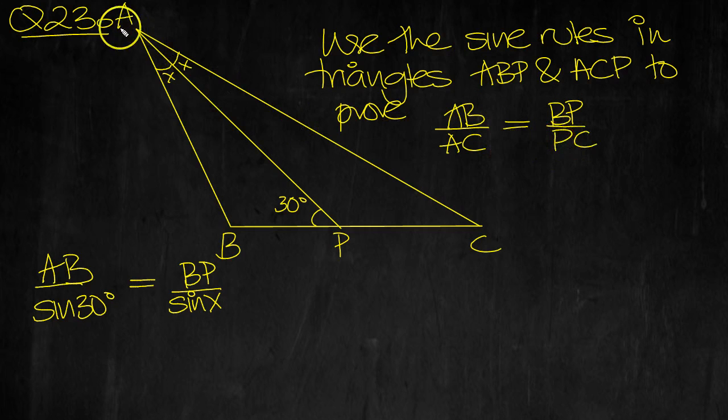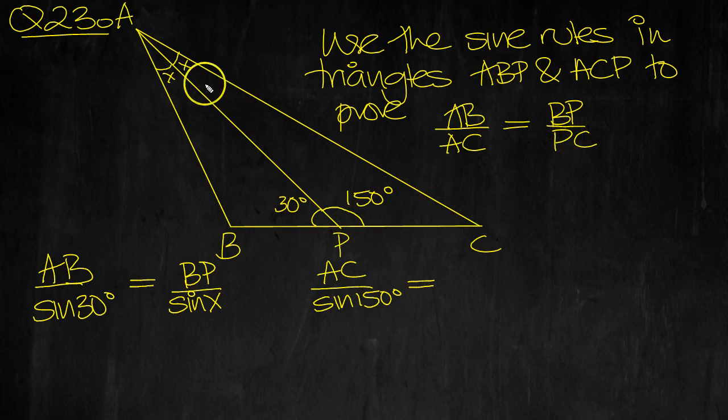Now AC and PC. This would be 150 degrees, wouldn't it? So we've also got AC over sine 150 is equal to PC over sine X. Now sine 30 and sine 150 are both one-half, so something over one-half—the half underneath brings it up.